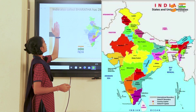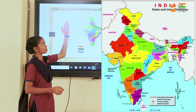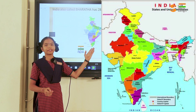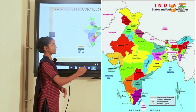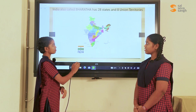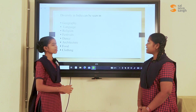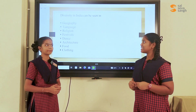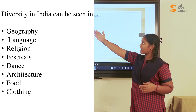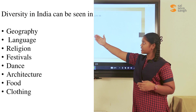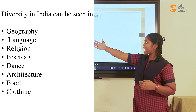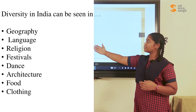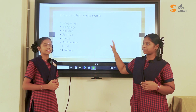India is also known as Bharat, which has 28 states and 8 union territories. Diversity of India can be seen in geography, language, religion, festival, dance, architecture, food and clothing.